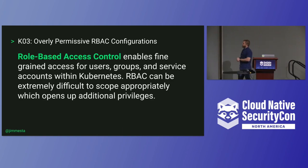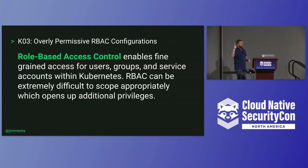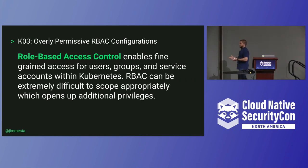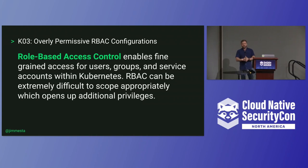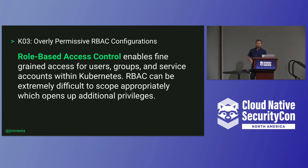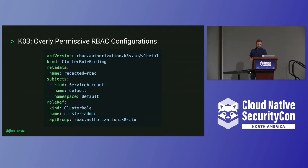My favorite: number three, overly permissive RBAC configurations. RBAC is how we enable access to end users, humans, and service accounts inside Kubernetes. It's totally 100% configurable, very verbose and very granular, which makes it easy to figure out a policy that works but also easy to have far more permissions than needed. We see a lot of privilege escalation and traversal attacks, and a lot of problems stemming from over-permissive access — which is why it makes the top three.